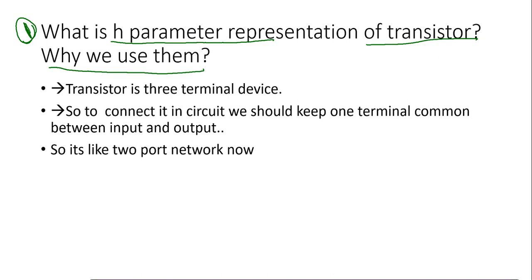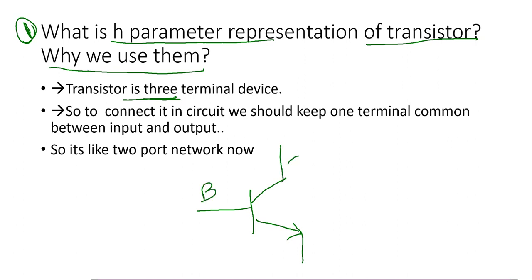Now we know the transistor is a three terminal device. Everyone knows this. So it is having three terminals — this is the symbol of the transistor. It contains one terminal as base, one as collector, and one as emitter.